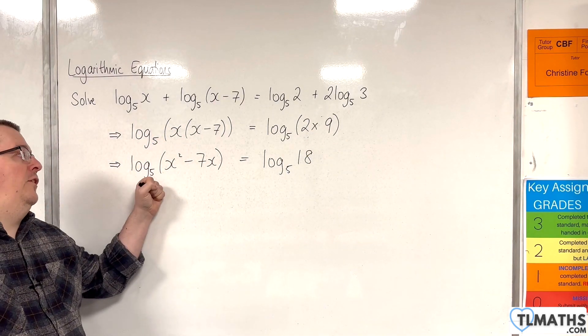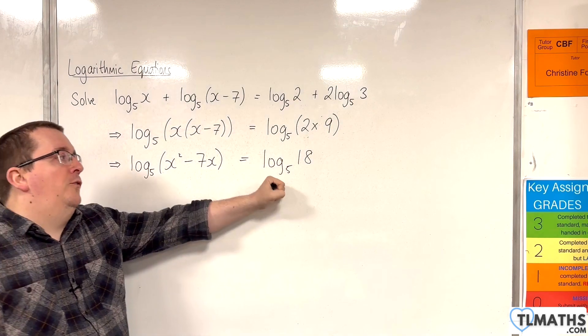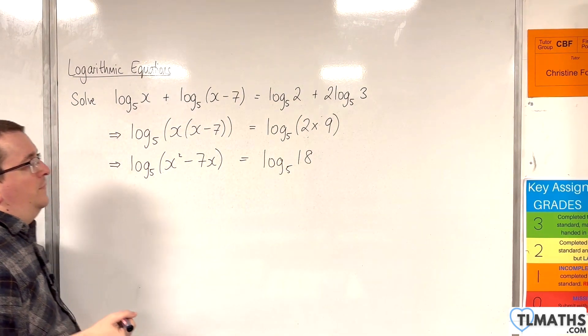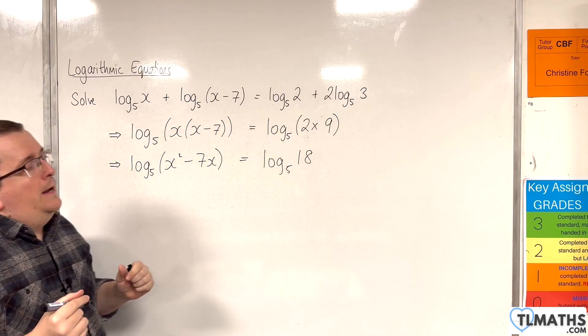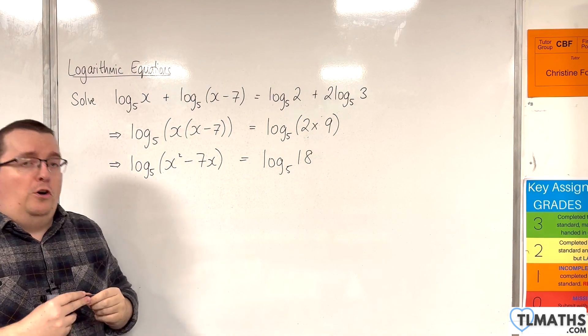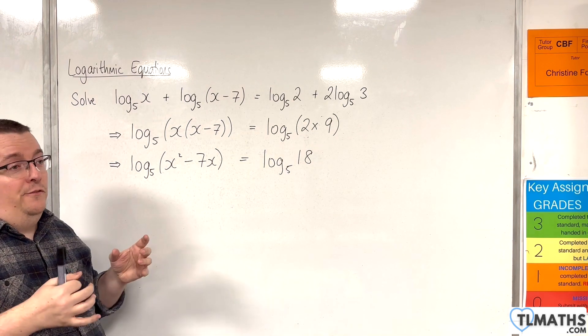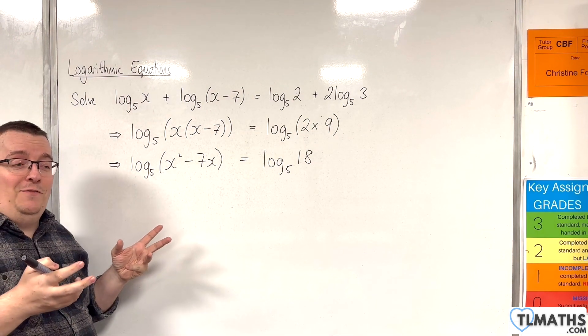Now if log base 5 of something is log base 5 of something else, those two somethings will have to be the same. Essentially we're used to logging both sides. In this case we are 5-ing both sides if you like.